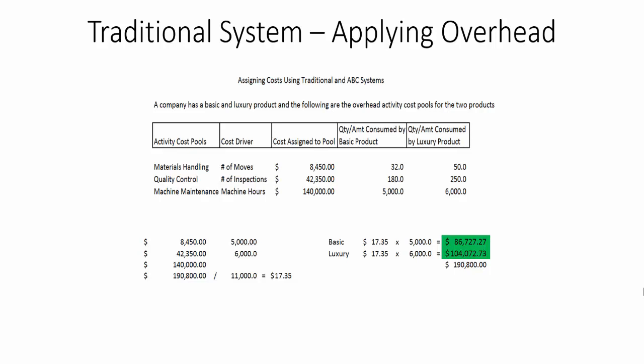That rate of $17.35 is then applied to the actual machine hours. $17.35 times 5,000 hours gives $86,727 allocated to the basic model. The same calculation is done for the luxury model. Out of that $190,800, the basic model gets a certain amount and the luxury model gets a certain amount, both based on the rate and their respective machine hours.